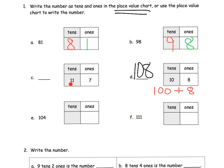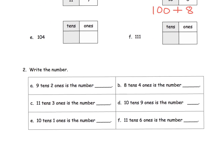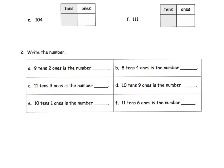So what would C look like? If we have 11 tens and 7 ones — we had 8, 9, 10, now we're at 11 tens plus 7 ones — that's going to be 117. I'm going to skip a couple because it's more of the same. Down here we're adding to the complexity — they've removed the place value chart. Now we have to go straight from the description to the number. 9 tens, 2 ones — that's 92. 10 tens and 1 one is 101. Let's do B: 8 tens, 4 ones gives us 84. That's the idea for question 2.